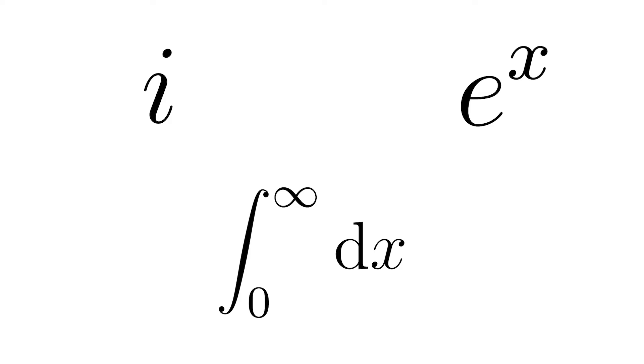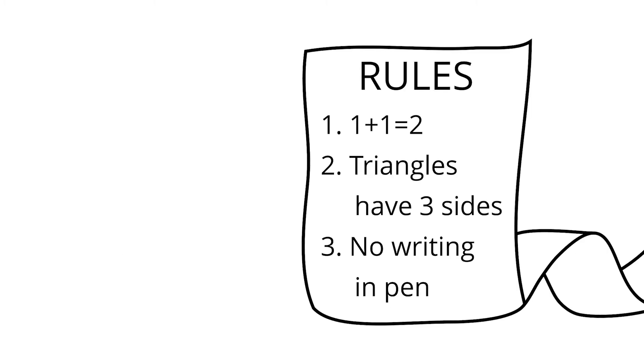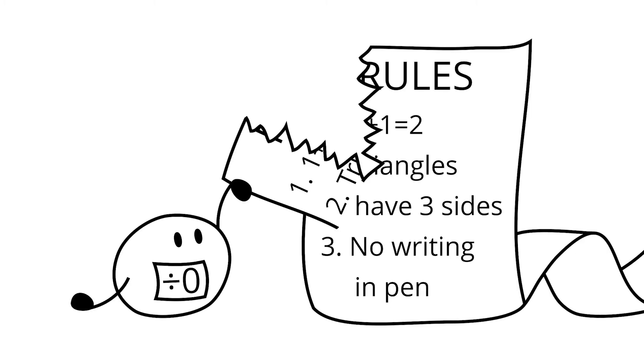It's better to think of an undefined operation as a banned rule-breaker. Math is, at its core, a list of self-consistent rules, and if something breaks that self-consistency, it must be thrown away.